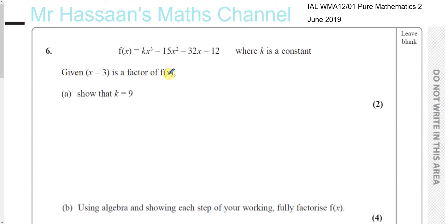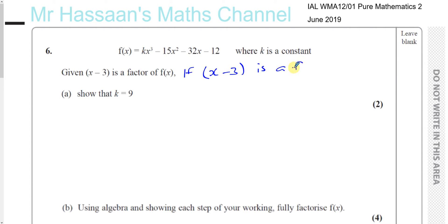Given that x minus 3 is a factor of f of x, show that k equals 9 for this expression. We know that if something is a factor of a function, then the value that makes the bracket zero, when substituted into the expression, will make the expression equal to zero.